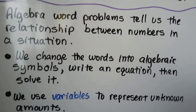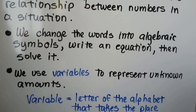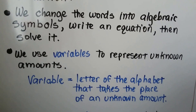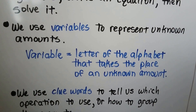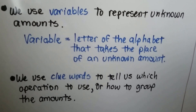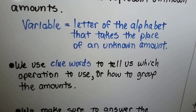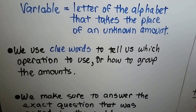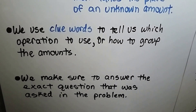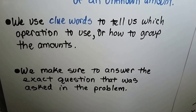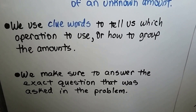Algebra word problems tell us the relationship between numbers in a situation. We change the words into algebraic symbols, write an equation, and then solve it. You should check it, too. We use variables to represent unknown amounts. A variable is just a letter of the alphabet that takes the place of an unknown amount. We use clue words to tell us which operation to use or how to group the amounts. We make sure to answer the exact question that was asked in the problem.